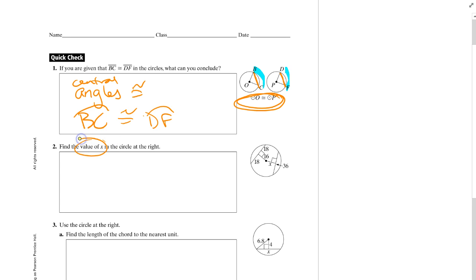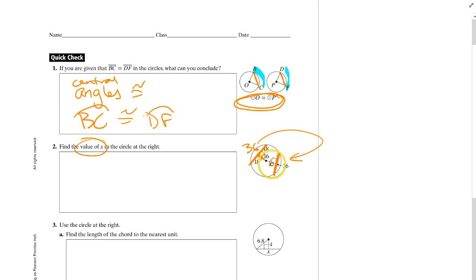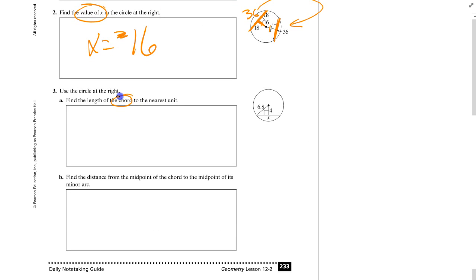Find the value of X in the circle. You know this length is 16 and this entire chord adds up to 36. We've got congruent chords, so the distances from the center have to be equal, meaning X equals 16. Next, find the length of the chord to the nearest whole number. If the perpendicular distance is 4 and the radius is 6.8, we can find the half-chord length using Pythagorean theorem.